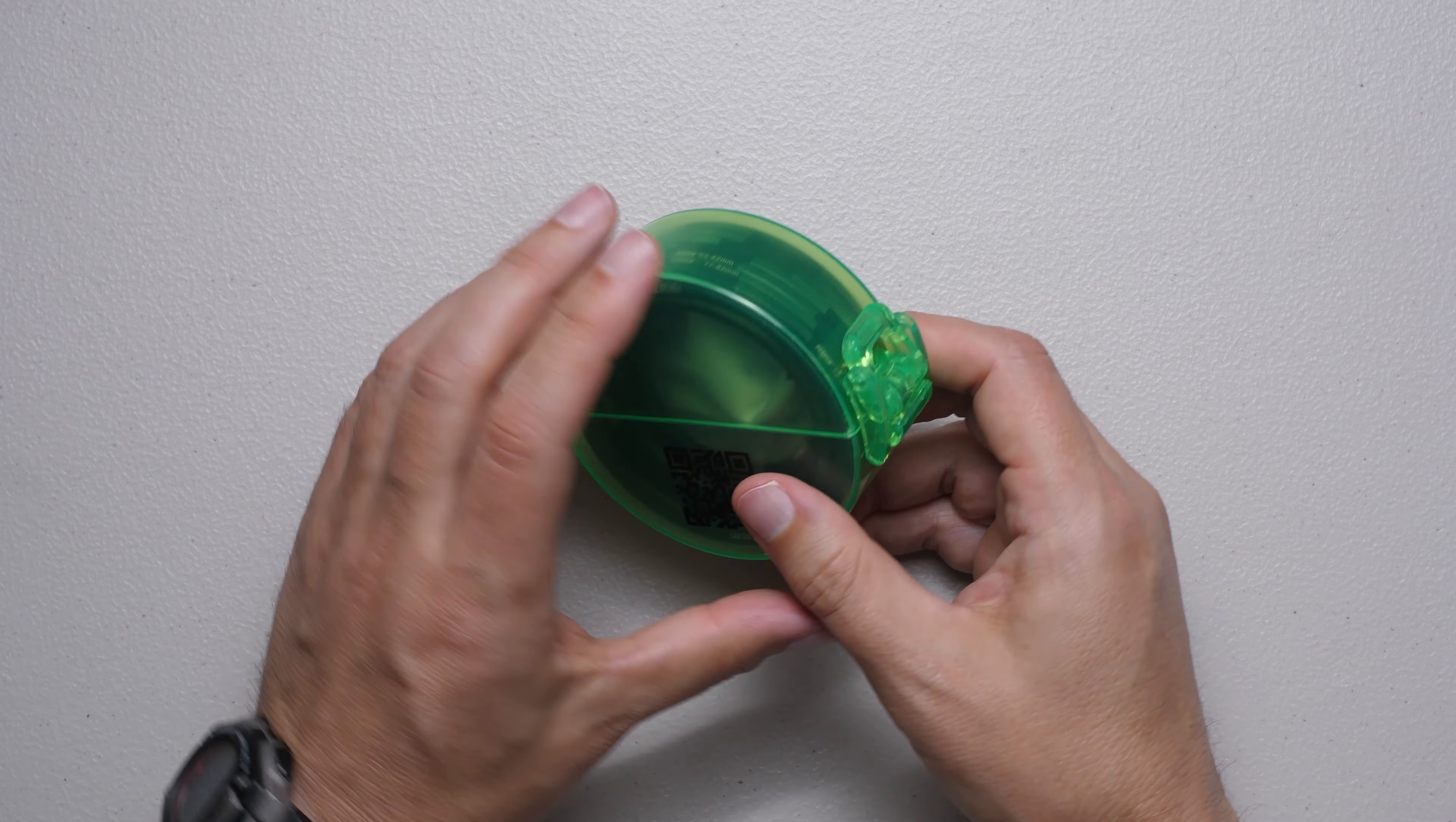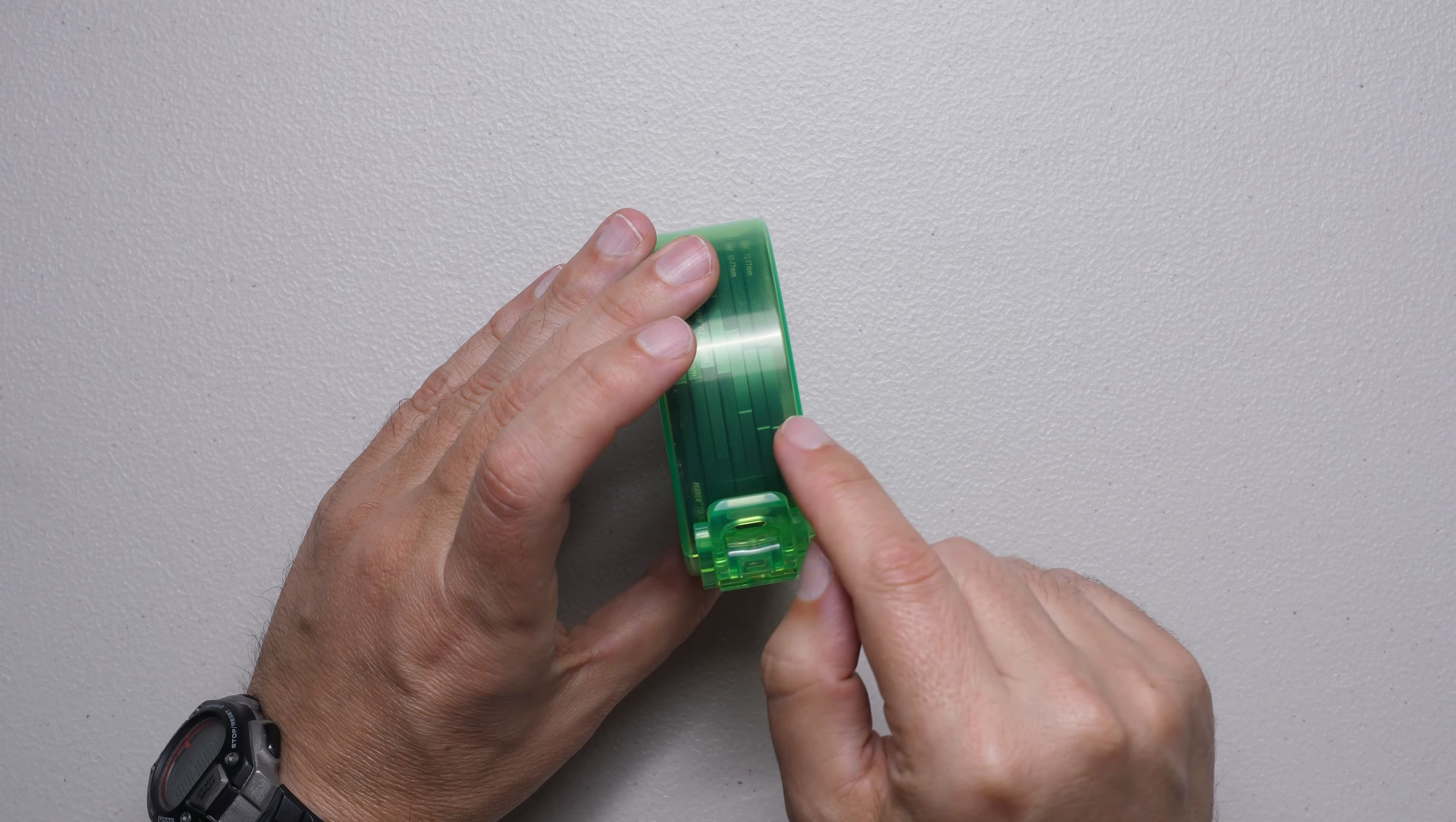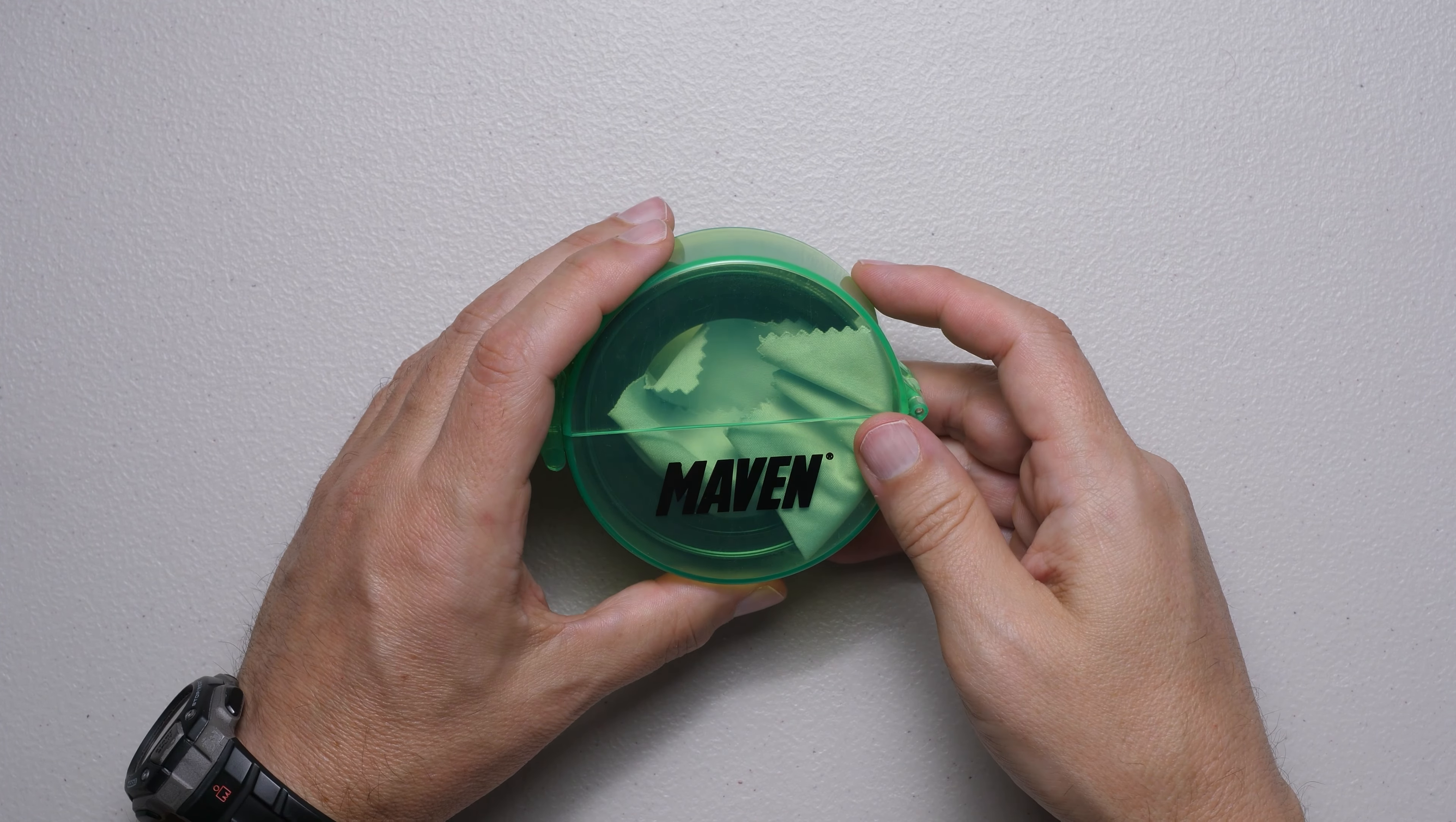In any event, that is the Maven Q-Box, what it's for. I think the most I've ever put in here was 10 filters, 10 or 11 filters, depending on how wide they are. Just an extra convenient way to carry your filters and accessories.